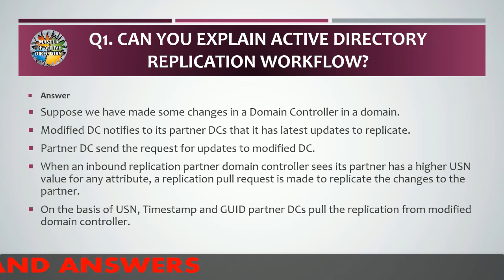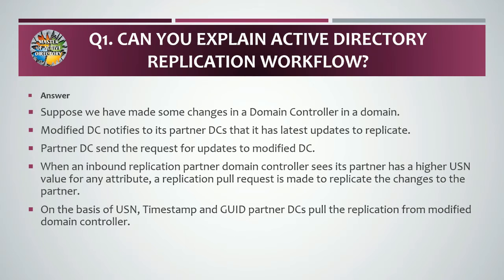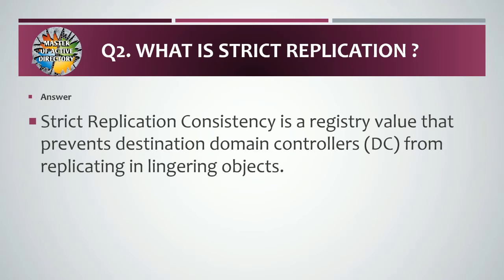Answer: Suppose we have made some changes in a domain controller. The modified domain controller notifies its partner DCs that it has a latest update to replicate. The partner DC then sends a request for updates to the modified DC. When an inbound replication partner domain controller sees its partner has a higher USN value for any attribute, a replication pull request is made to replicate the changes to the partner on the basis of USN, timestamp, and UID. Partner DCs pull the updates from the modified domain controller.